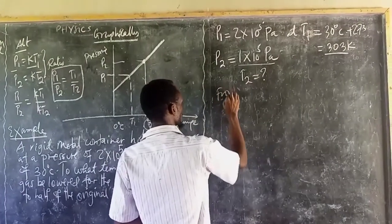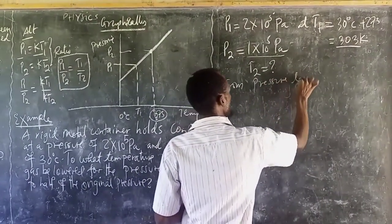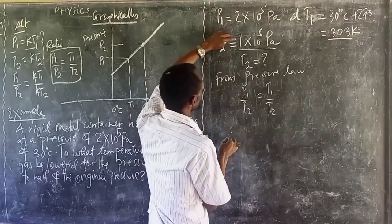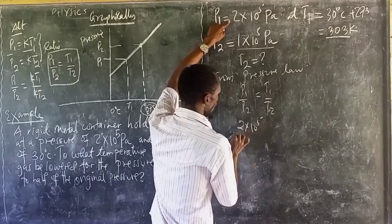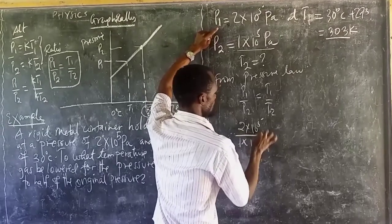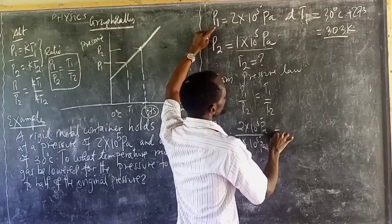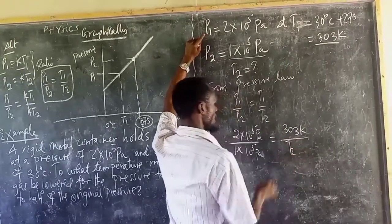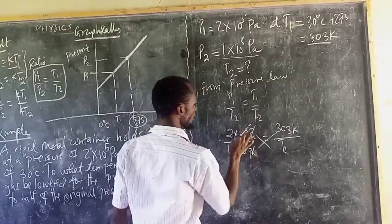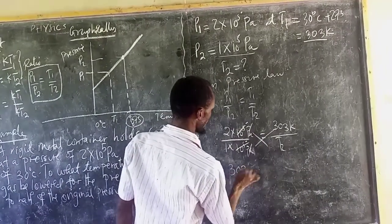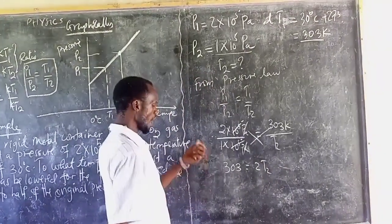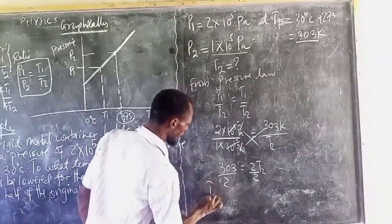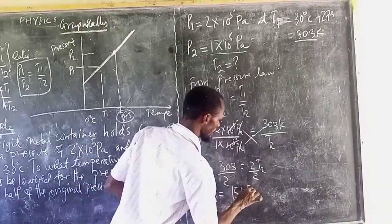Applying the pressure law: P1 over P2 equals T1 over T2. P1 is 2 times 10 to the power 5, P2 is 1 times 10 to the power 5, and T1 is 303 K. Solving for T2 by cross multiplication: 303 equals 2 times T2. Dividing both sides by 2, T2 equals 151.5 Kelvin.